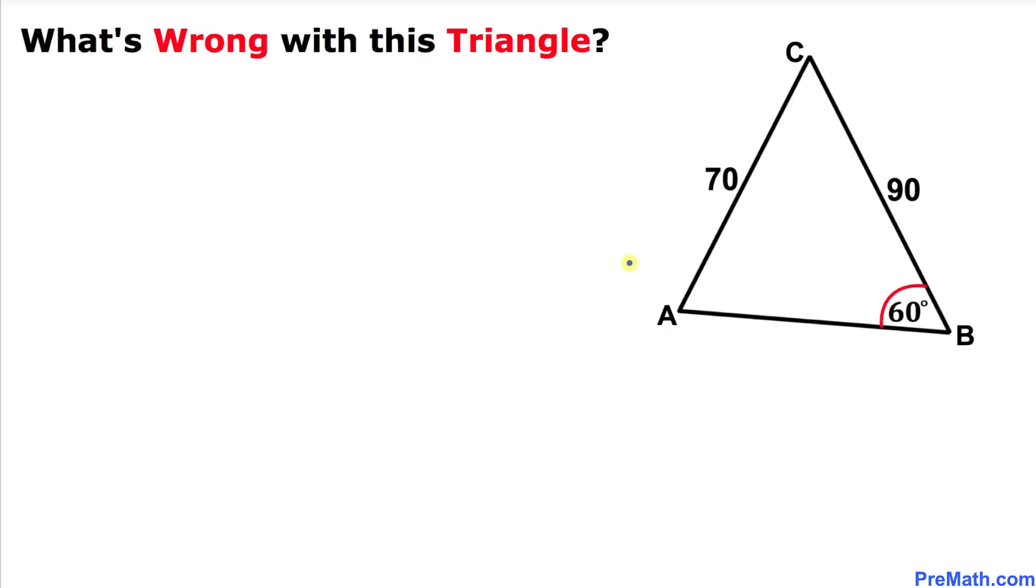Let's get started with the solution. Let's label this triangle ABC. Since this is vertex A, the opposite side is going to be lowercase a. Since this vertex is B, the opposite side is going to be lowercase b. Furthermore, let me call this angle alpha and this angle beta.